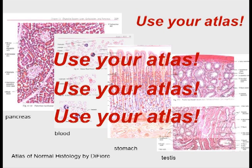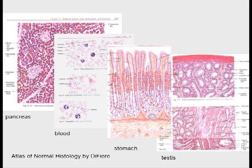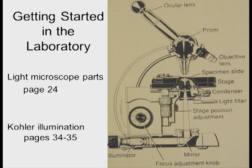Use your atlas. The things we see here are the pancreas with a lot of pink and blue, blood cells, the stomach with the parietal cells showing so nice and pink, and then the testis. Those will be the tissues that we will look at today.